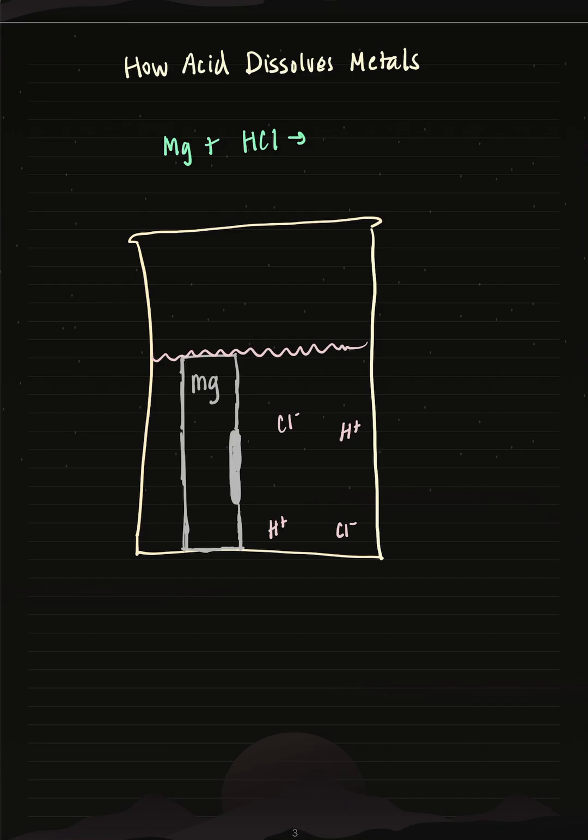How do acids dissolve metals? Let's take a look at a classical experiment between magnesium and hydrochloric acid.